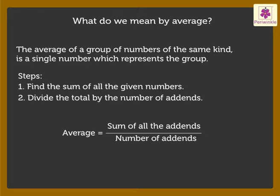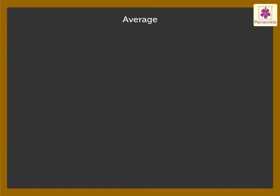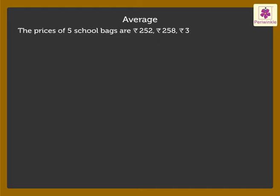Now, let us see how to find average with the help of a few examples. The prices of 5 school bags are 252, 258, 376, 390 and 364 rupees.